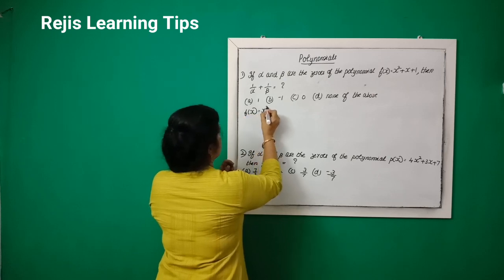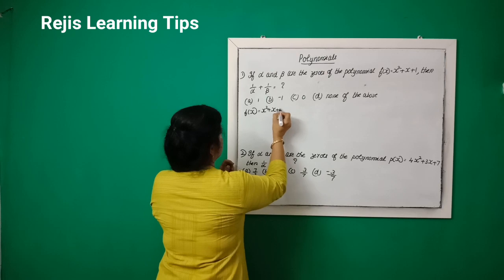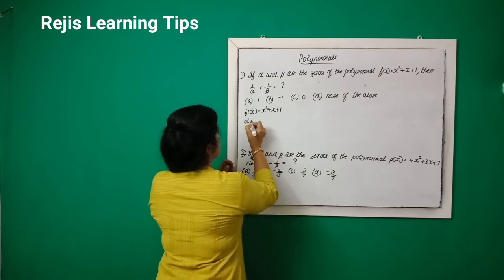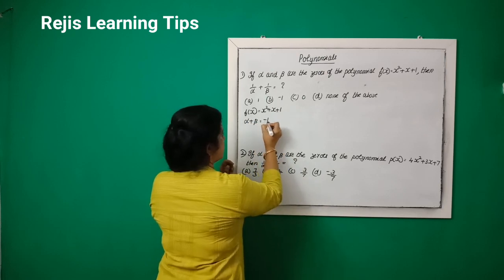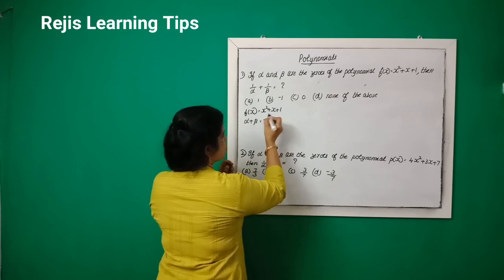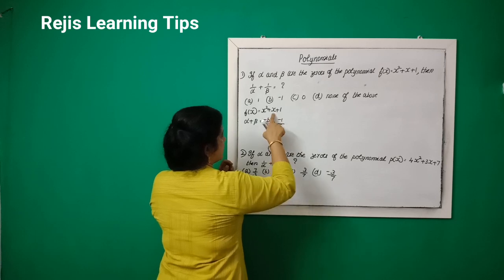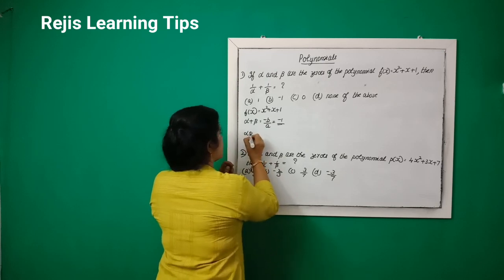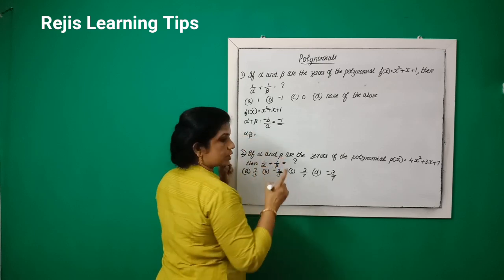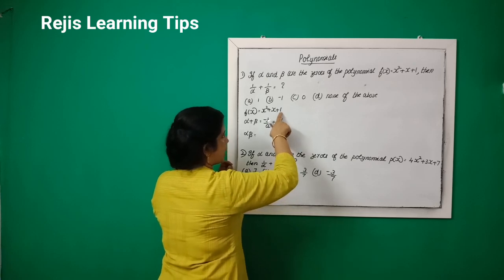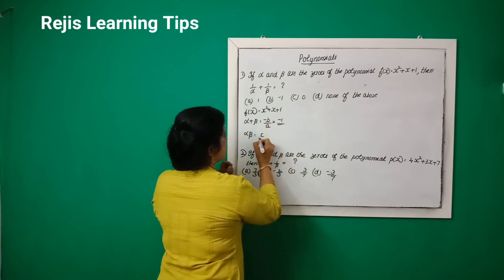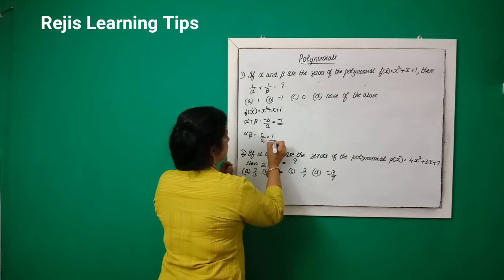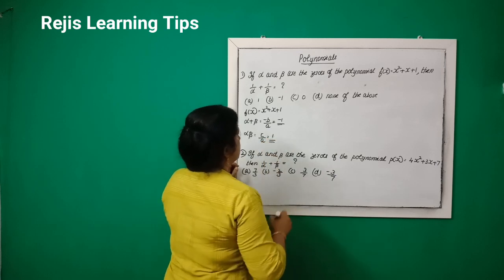f(x) = x² + x + 1. The sum of the zeros α + β is equal to -b/a, that is -1/1, which equals -1. Then the product of the zeros α·β is equal to c/a, that is 1/1, which equals 1.